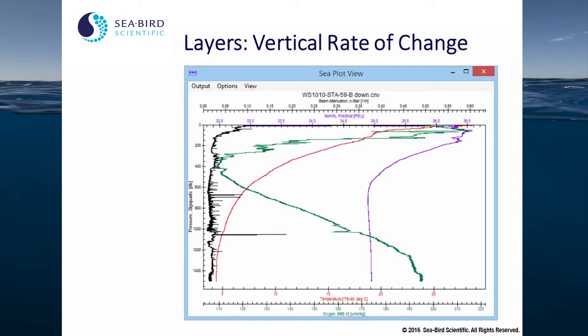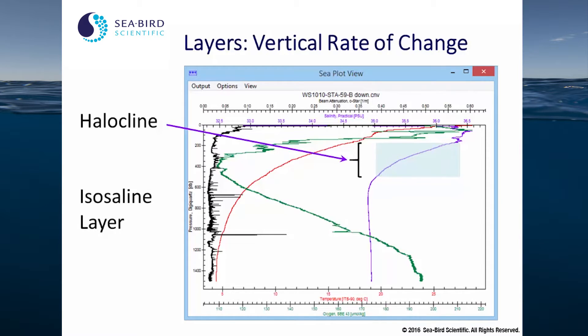For example, again, on our C-plot view, we can look at some layers. The halocline is an area in which the salinity changes significantly and rapidly. The isosaline layer is below the halocline, and it's an area where there is very little change in the salinity signal.